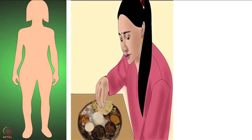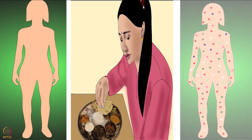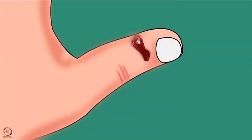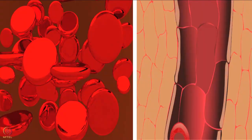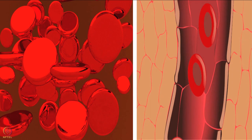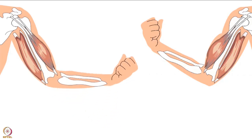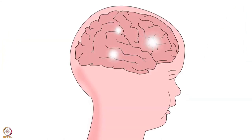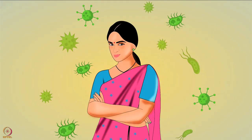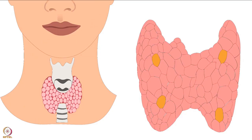Our body does not produce minerals by itself; hence they have to be taken through diet. Minerals are required for blood clotting. They help in maintaining blood sugar and blood pressure. Production of hemoglobin and red blood cells requires minerals. They also contribute towards muscle contraction and brain development.